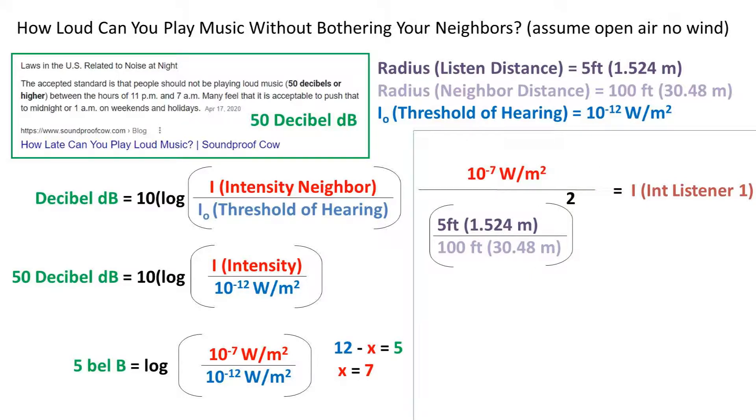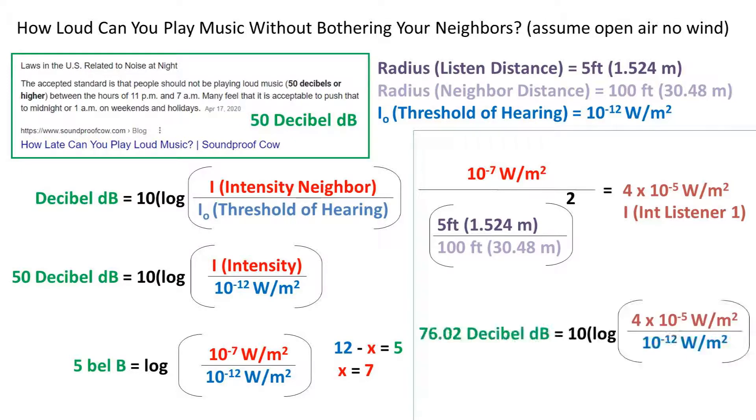Now we can plug in our neighbor's intensity, and the radius of the listener, and the radius of the neighbor into the equation. Pressing the energy on our calculator, we get 4 times 10 to the negative 5th watts per meter squared for the intensity at the listener's position from the speaker, or your position. Now we can plug this value into the decibel formula, and we get a decibel reading of 76.02 decibels.